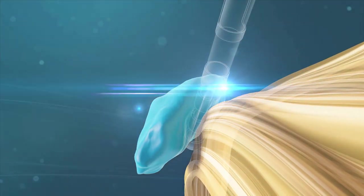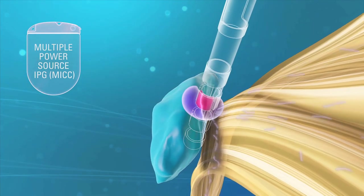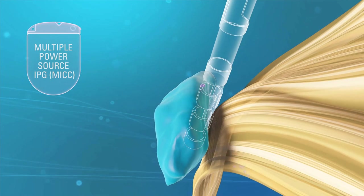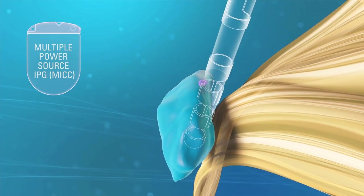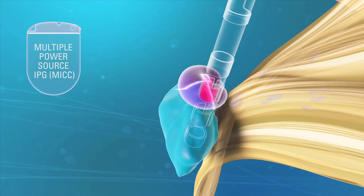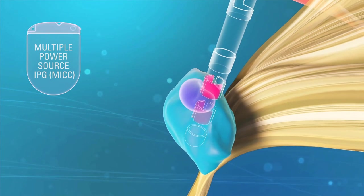Unlike single-source systems, the Versailles Cartesia Directional Lead is powered by a multiple-source IPG, where each and every contact has its own power source. This allows for precise control of the size and shape of stimulation at each electrode, steering current to the desired therapeutic target while avoiding side-effects regions.